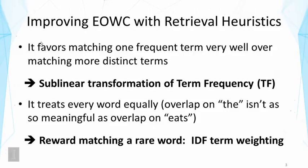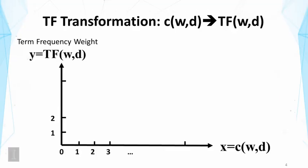To address the first problem, we can use a sublinear transformation of term frequency. That is, we don't have to use the raw frequency count of a term to represent the context. We can transform it to some form that wouldn't emphasize so much on the raw frequency.